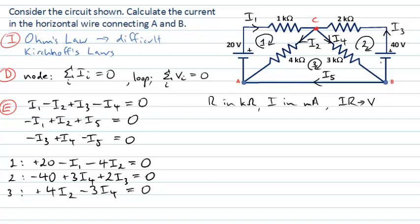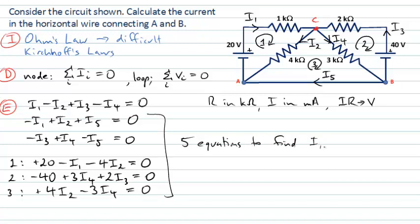There are clearly five unknowns in this circuit: I1, I2, I3, I4 and I5. So strictly speaking, I need five independent equations. The three node equations only give two independent equations. But the three loop equations are each independent, giving three more. Two node equations plus three loop equations gives five equations for five unknowns — enough to mathematically identify every current.